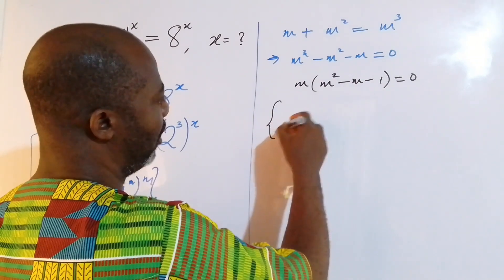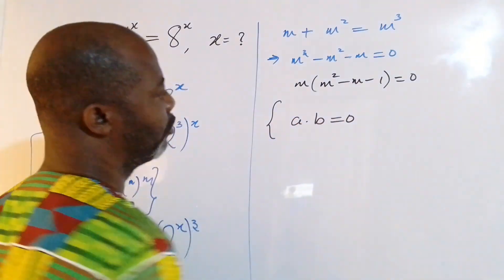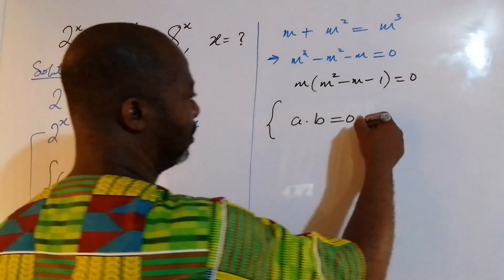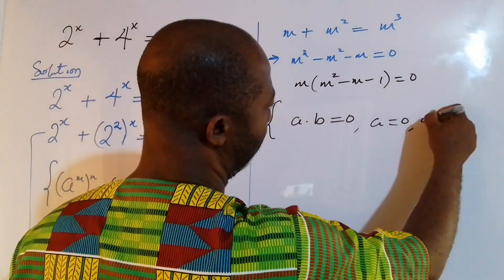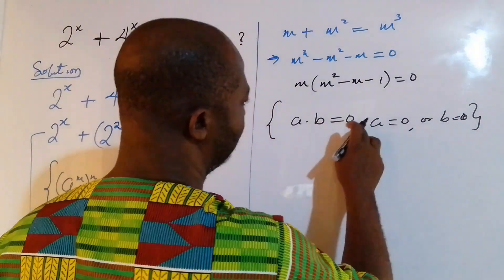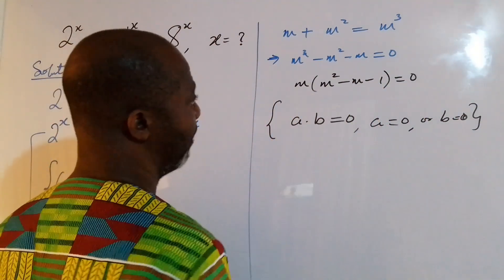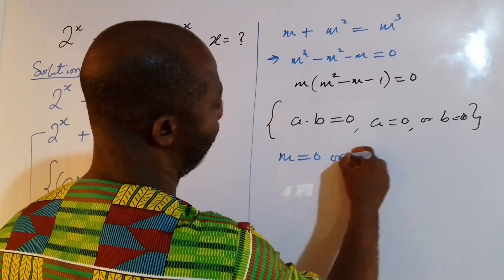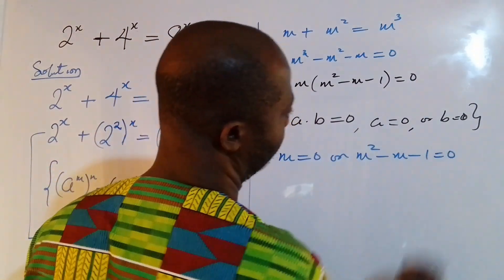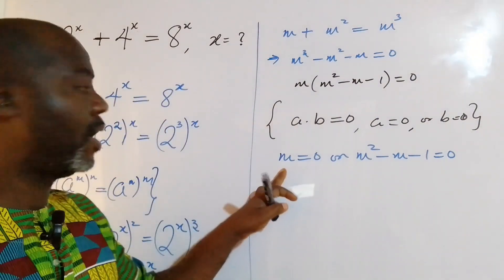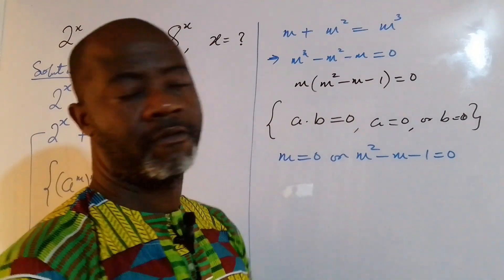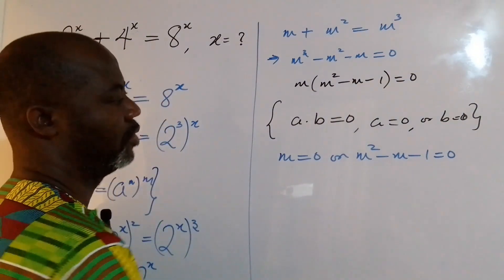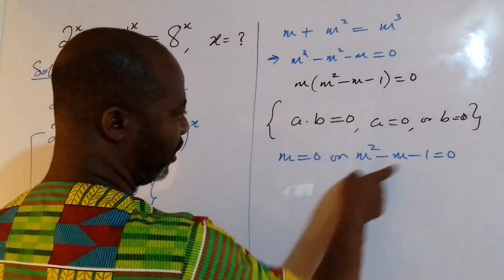By the zero product law — if the product of two numbers is 0, then either factor is 0 — we get m equal to 0, or m squared minus m minus 1 equal to 0. So we already have one value of m equal to 0. Now we're going to solve the second factor, which is a quadratic.